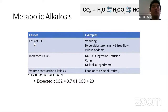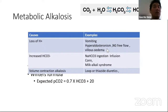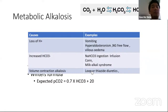Metabolic alkalosis can occur due to loss of gastric acid — such as in persistent vomiting, hyperaldosteronism, chronic NG free-flow drainage, or villous adenoma causing large acid losses — or increased bicarbonate ingestion or infusion. Other causes include Conn's disease, milk-alkali syndrome, or volume contraction alkalosis from chronic furosemide or thiazide use. The expected PaCO2 for compensation uses the formula: 0.7 × bicarb + 20.